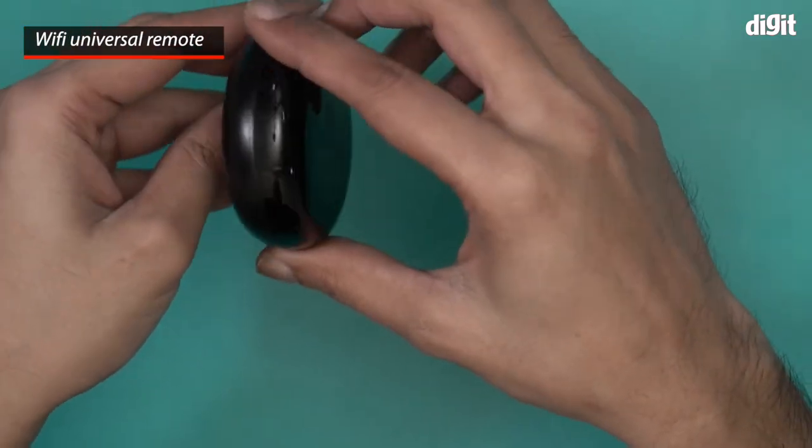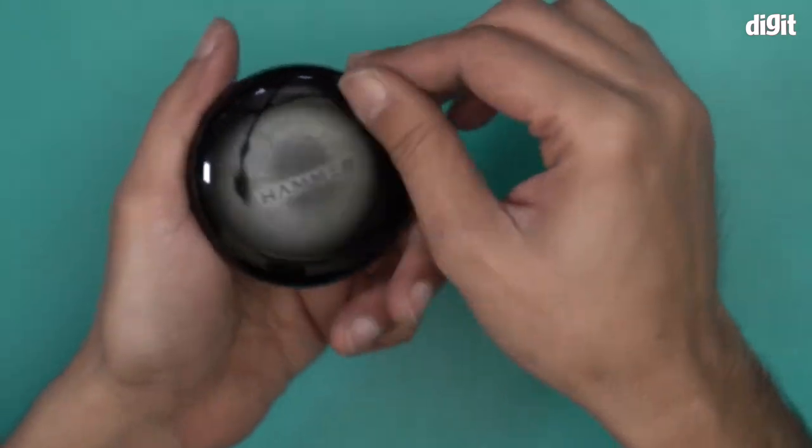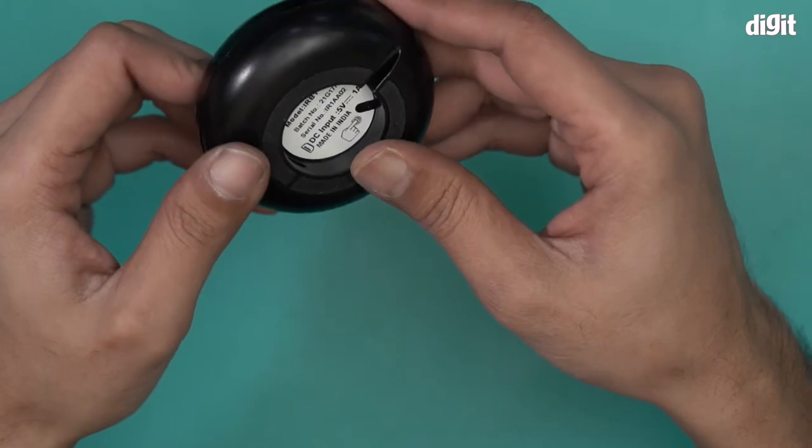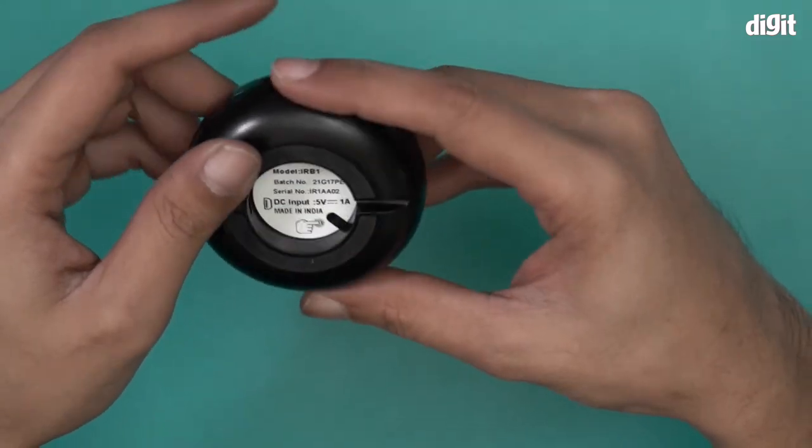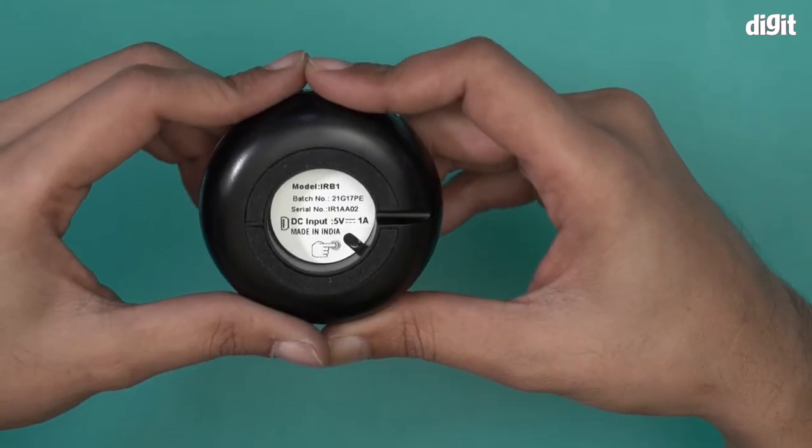It's very small and compact with a Hammer logo right over here. Underneath, there are some specifications mentioned. The model is IRB1, DC input is 5 volt, and it's made in India.